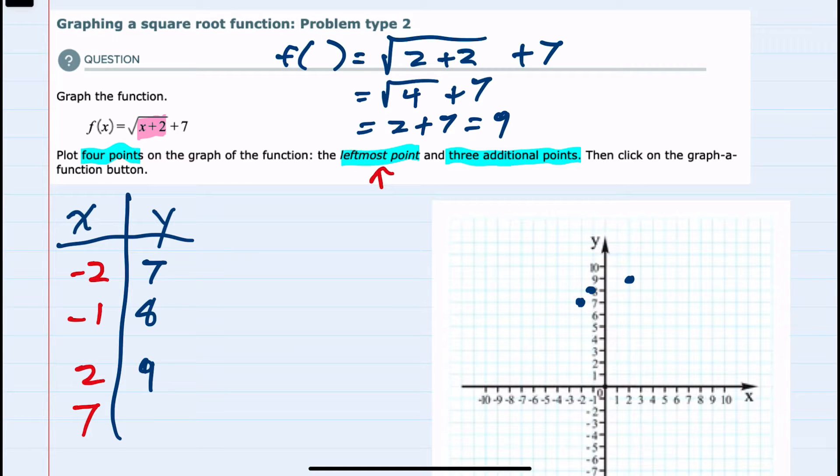And then lastly for 7, f of 7, replacing the x with 7, would give us the square root of 9 plus 7, or 3 plus 7, which is 10. So our coordinate 7, 10 would be here.